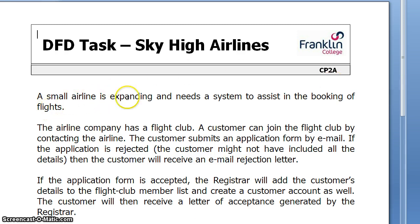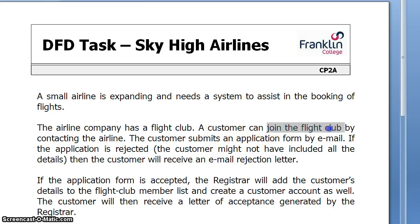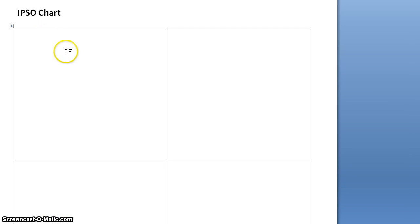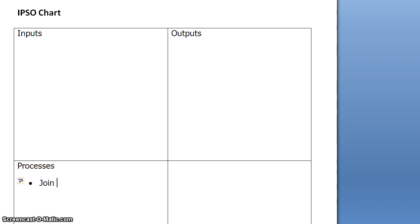Looking through, as we start to read, it's the second paragraph that we can start to identify what the inputs and outputs are. So if we put inputs here, I always like to have outputs over here, and processes. So first process: join flight club.